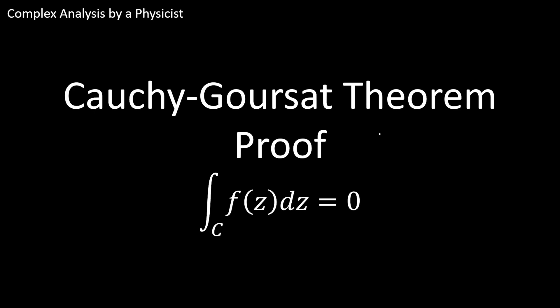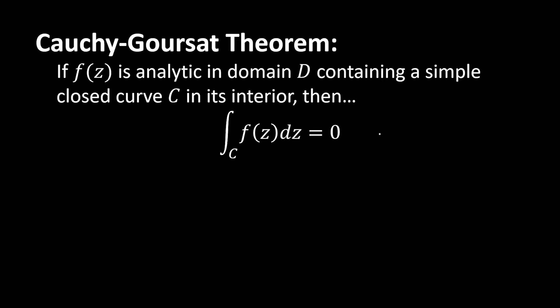Naturally, I'm a physicist, so at some point I may do something to upset some of you mathematicians in this proof, but we're going to be doing a very straightforward proof of the Cauchy-Goursat theorem. The theorem pretty simply states: if we have some complex function and it's analytic in a domain containing a simple closed curve C in its interior, then the integral — or path integral or line integral — around that curve is going to be zero.